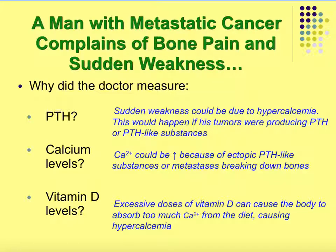A man with metastatic cancer complains of bone pain and sudden weakness. The doctor measures his parathyroid hormone levels, calcium levels, and vitamin D levels. Parathyroid hormone causes you to break bone, increasing calcium levels in the blood — so the doctor checks if PTH is being overproduced. Calcium levels are checked because parathyroid hormone raises blood calcium. Vitamin D levels are checked because excessive doses of vitamin D can cause too much calcium to be absorbed from the diet, potentially explaining the hypercalcemia.